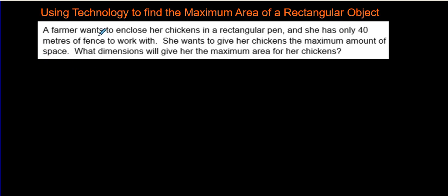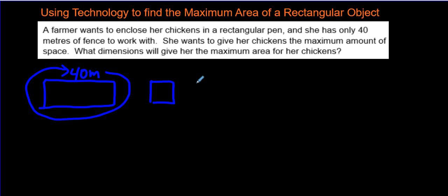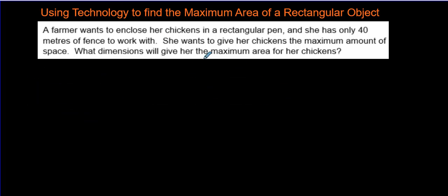Here's the situation. A farmer wants to enclose her chickens in a rectangular pen. She has only 40 meters of fence to work with. She wants to give her chickens the maximum amount of space. What dimensions will give her the maximum area for her chickens?